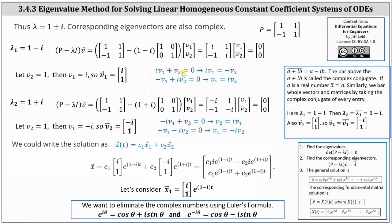Using the first equation, we know that i·V₁ equals negative V₂, or using the second equation, we have V₁ equals i·V₂. If we use the second equation and let V₂ equal one, notice V₁ is equal to i, giving us a corresponding eigenvector — the vector V₁, which is the vector [i, 1].